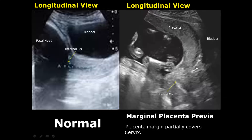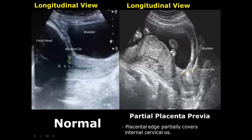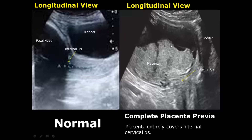When the placenta overlies the cervix it is known as placenta previa. The first type is marginal placenta previa, in which the placental edge or placental margin will overlie the cervix but will not cover the internal os. In partial placenta previa, the placenta will partially cover the internal os — here only the inferior part is covering the internal os. In complete placenta previa, the placenta will completely overlie the internal os, as you can see here.